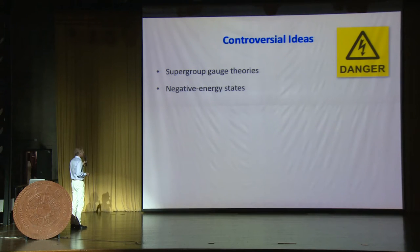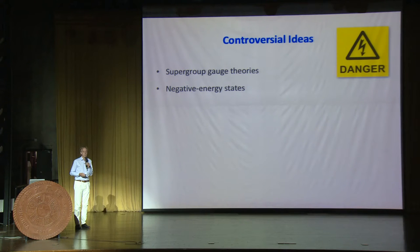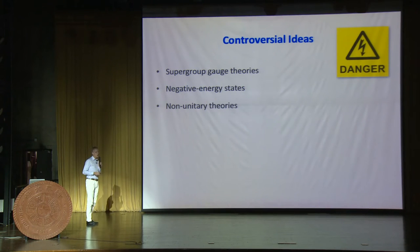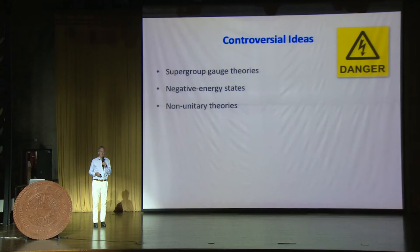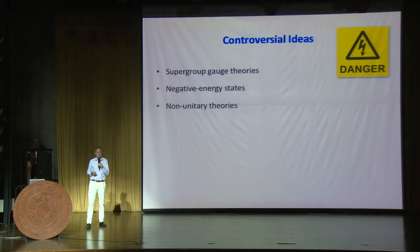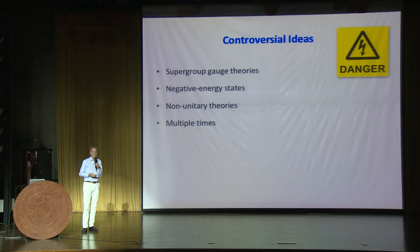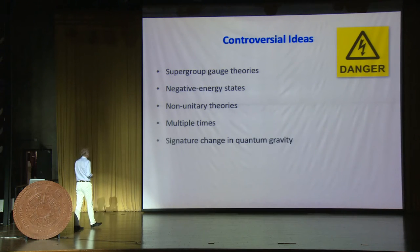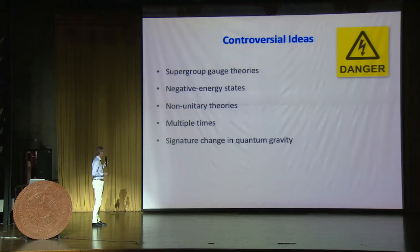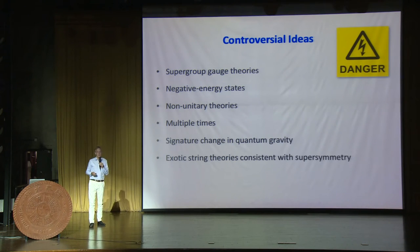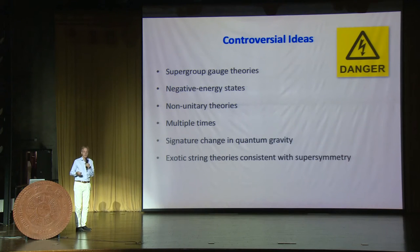As I will argue, this is related to many other controversial topics: the presence of negative energy states, negative energy or negative tension branes, non-unitarity and non-unitary theories and their role in physics and string theory, to what extent we can prove the existence of such non-unitary theories, the signature of space-time with more than one time variable, and how signature changes can happen in quantum gravity. The main point is that all these topics are connected.